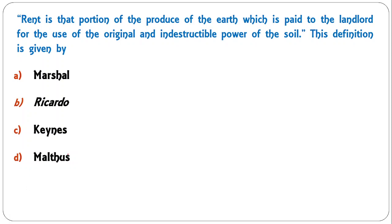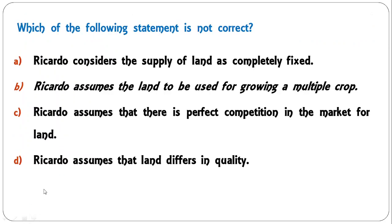Rent is that portion of the produce of the earth which is paid to the landlord for the use of the original and indestructible power of the soil. This very popular definition was given by Ricardo — it is the Ricardian definition of rent.